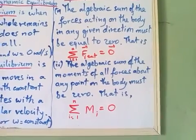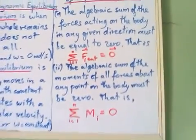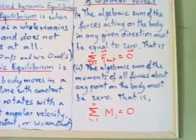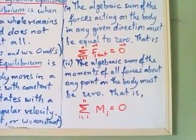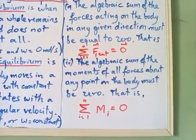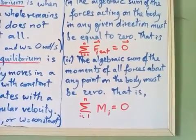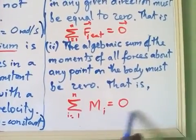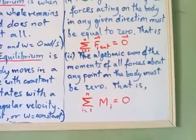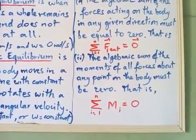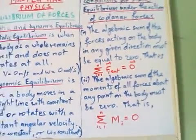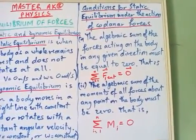The second condition is: the algebraic sum of the moment of all forces about any point on the body must be zero. There is a separate video where I have explained about moments. For an object that can rotate about a fixed point being at rest, the algebraic sum of its moments is zero — meaning the sum of moments in the clockwise direction equals the sum of moments in the anticlockwise direction.